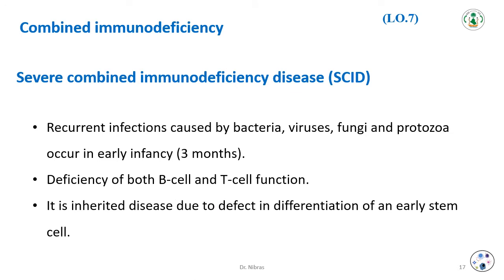Severe combined immunodeficiency disease — SCID — involves recurrent infections caused by bacteria, viruses, fungi, and protozoa, occurring in early infancy around three months. There is deficiency of both B cells and T cells, hence it is called severe combined immunodeficiency, meaning both humoral and cellular defects are present. It is an inherited disease due to a defect in differentiation of an early stem cell.